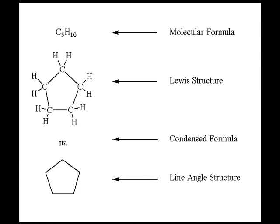Finally, here's an example of a cycloalkane. It's a cyclopentane, C5H10.